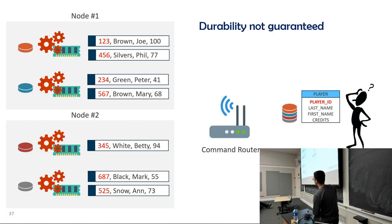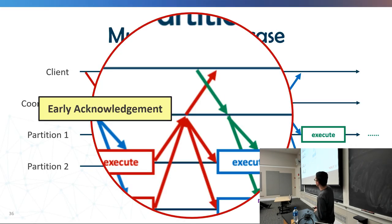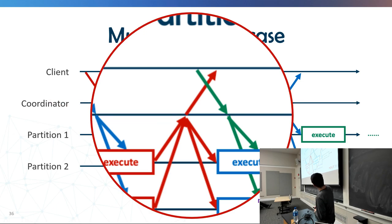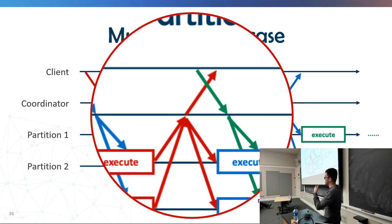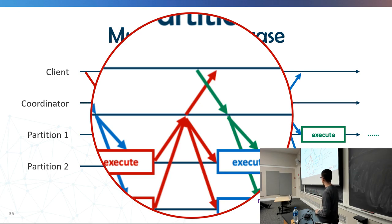Regarding whether the command router runs on the same machine as data nodes: the VoltDB cluster is homogeneous — there's no dedicated master or coordinator node. Everyone can do the routing; the router is just an abstraction.